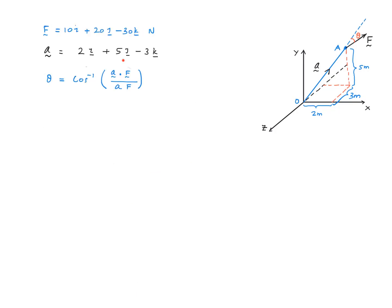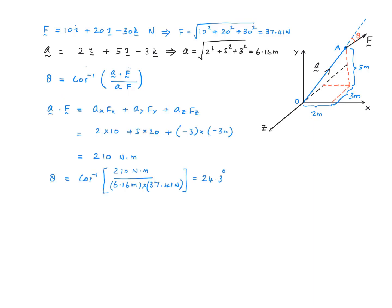Here's the summary from the previous slide. Let's go ahead and find the angle theta. First, I find the magnitude of F over here. We get a value of 37.41 N for that. Then I find the magnitude of little a, which is 6.16 meters. Then I calculate the dot product between little a and F, which works out to be 210 N·m. Now I'm ready to calculate the angle theta.